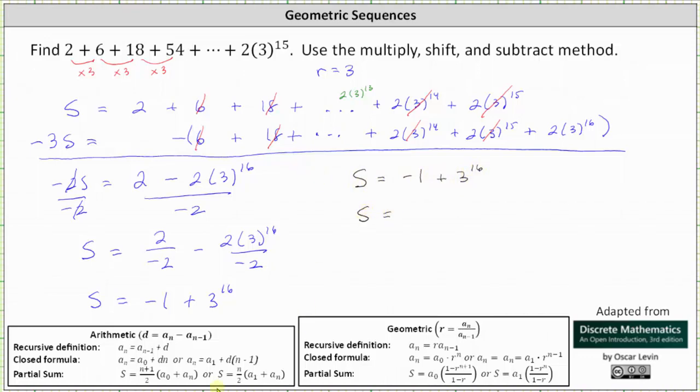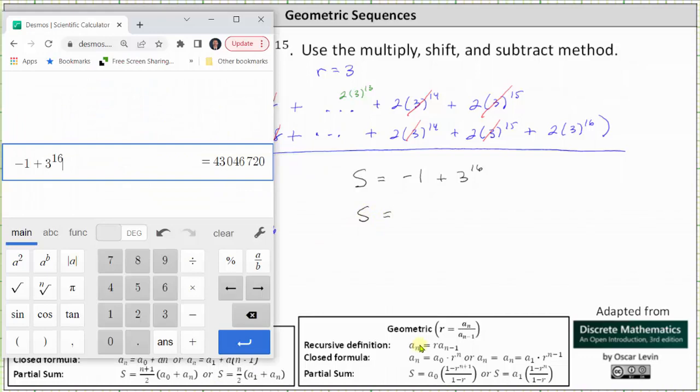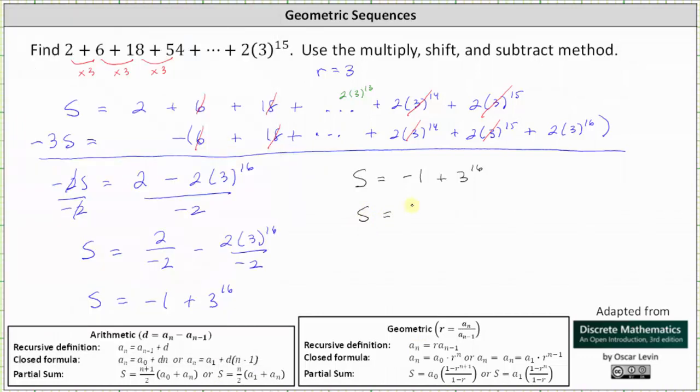And now let's use the calculator. The sum is 43,046,720. So just keep in mind the multiply, shift, and subtract method only works when we have a sum of a geometric sequence or a geometric series. I hope you found this helpful.